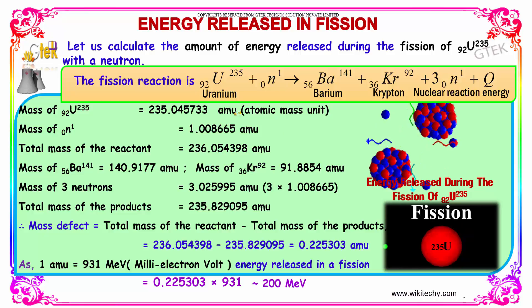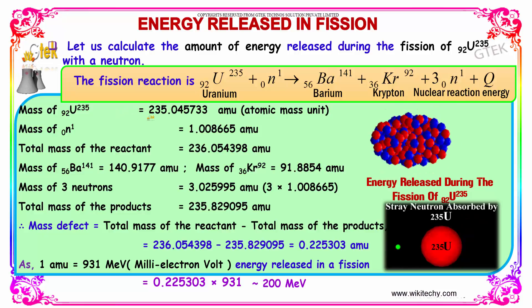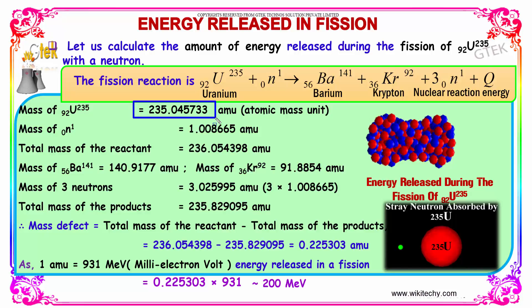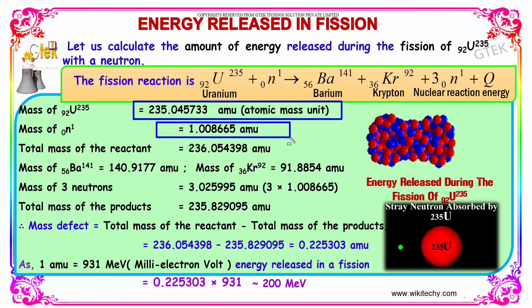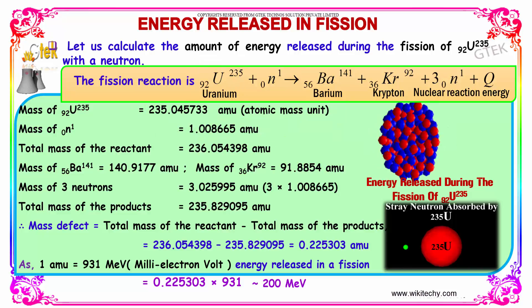Uranium will have a mass of 235.045733 atomic mass units. The neutron will have a value of 1.008665 amu. The total mass of the reactants is given by adding these two values, giving 236.054398 amu.